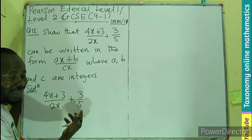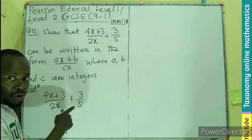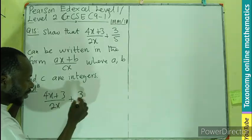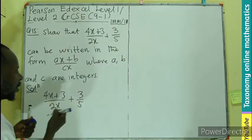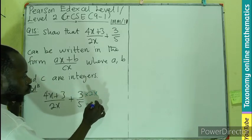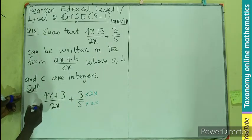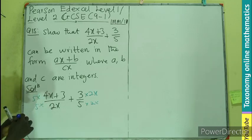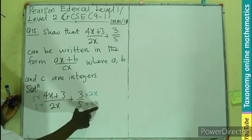We can cross multiply their denominators, meaning I'll be multiplying here by 2x, and here I'll be multiplying by 5, so that the denominators become the same.